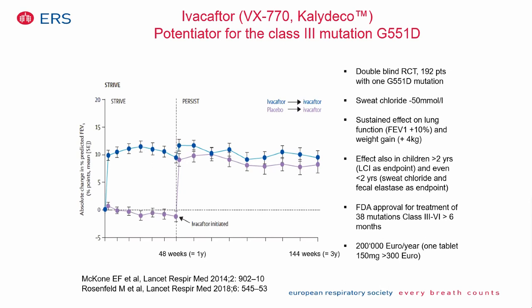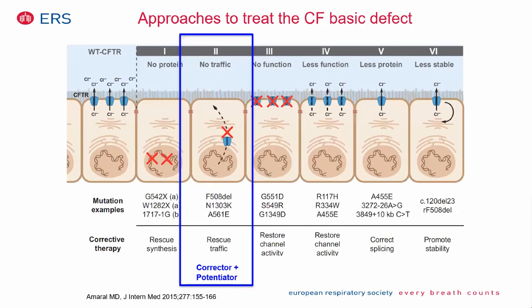Ivacaftor is now approved for treatment of children as young as two years of age for several class 3 to 6 mutations. The major drawback is its extreme cost — more than 200,000 euros per year per patient — making it inaccessible for many countries.